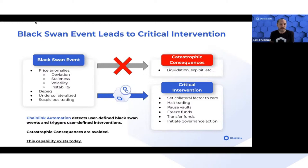If it's not detected, do nothing. But when it is detected, it can perform whatever function the user has designated as their preferred critical intervention — that might be stopping borrowing on a particular asset.